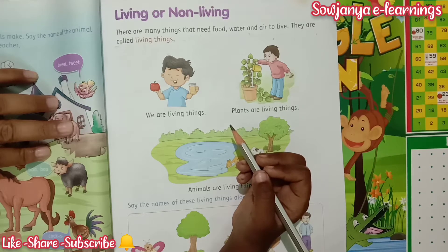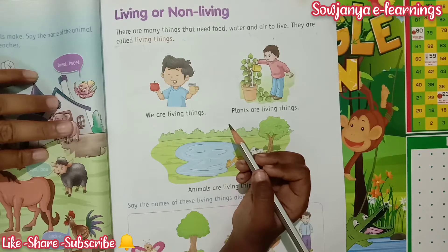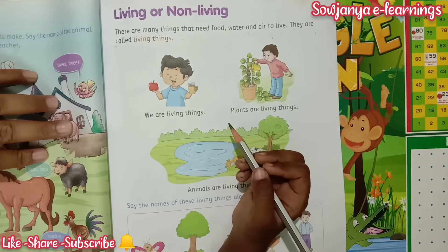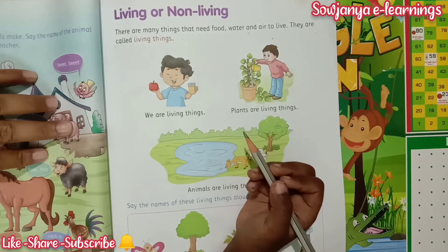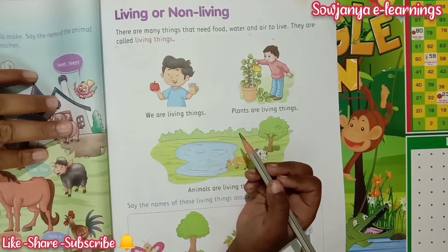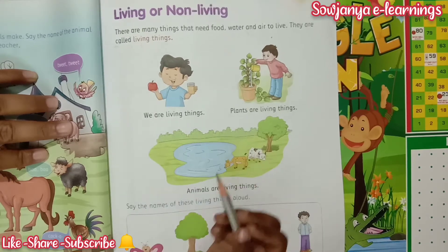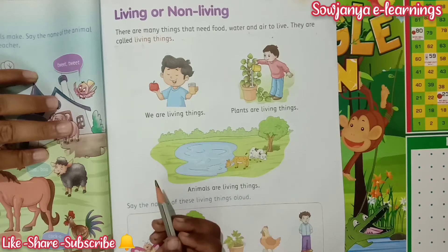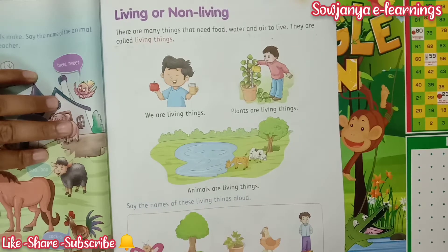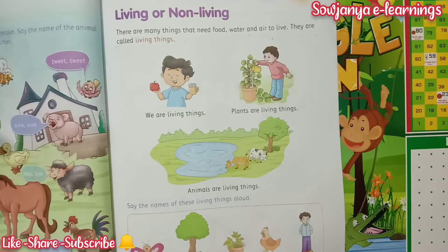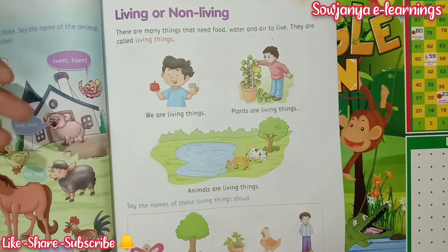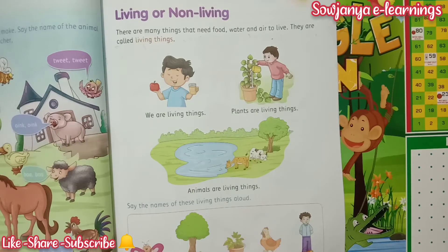So living things need all these things. Living things can grow. They can grow, they will eat food, they will take breath, and living things can also move. And living things have a life.